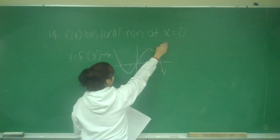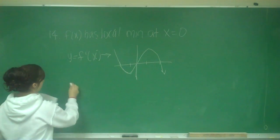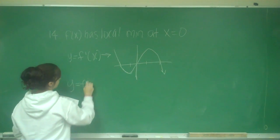To figure out if f(x) has a local min at x equals 0, we need to graph the original function. So y equals f(x).